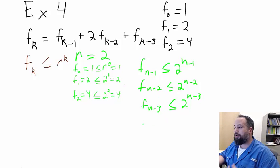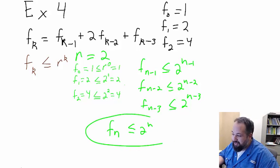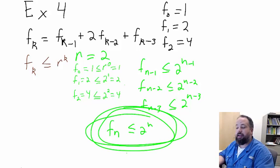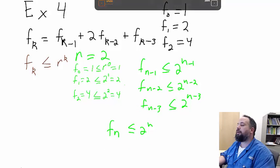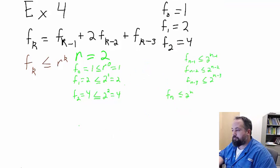Based upon that, we want to prove our inductive step, which is that f of n is less than or equal to 2 to the n. So, this is our inductive step. This we assume to be true.